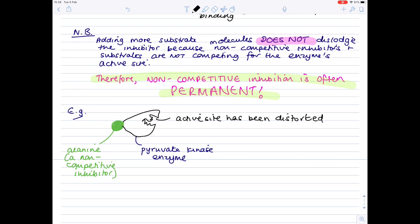So just to show you a little diagram, here we have alanine. It's the non-competitive inhibitor. It's bound to pyruvate kinase and it's bound to an allosteric site. So it hasn't bound to the active site, but by binding it has altered the shape of that active site.